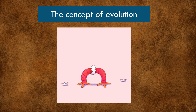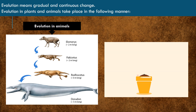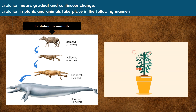The Concept of Evolution. The word evolution means gradual and continuous change. Gradual means slow. Evolution is a process of gradual change that takes place over many generations, during which species of animals, plants, or insects slowly change some of their physical characteristics.